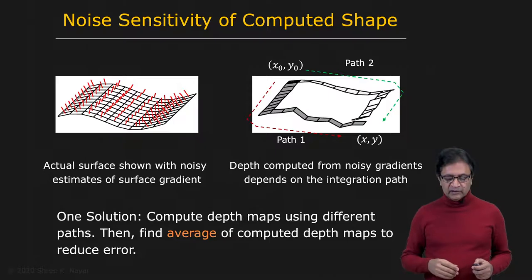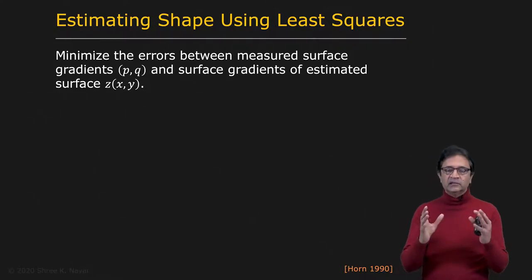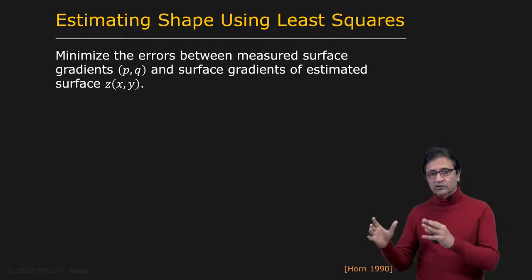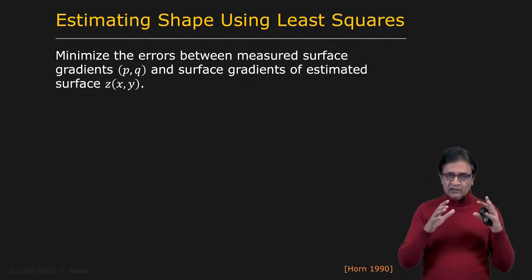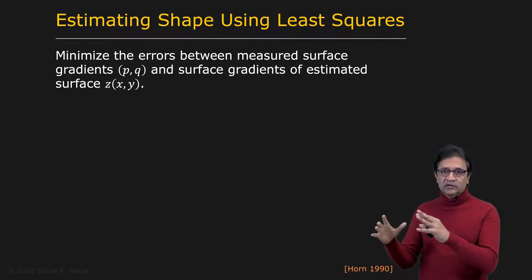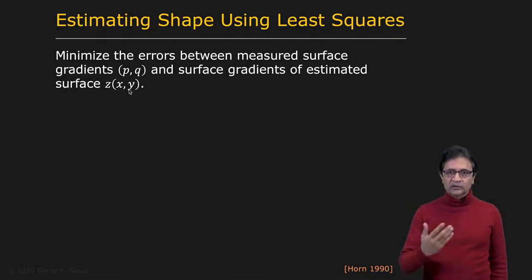It turns out you can do much better than averaging. We can come up with an elegant solution using least squares. The idea is: if you integrate the surface gradients p,q and get a surface z(x,y), you can compute p,q values from that z(x,y). Those p,q values should be as close as possible to the measured p,q values. In other words, you're trying to find a surface that minimizes the errors between the measured surface gradients p,q and the surface gradients of the estimated surface z(x,y).